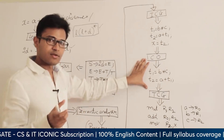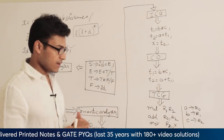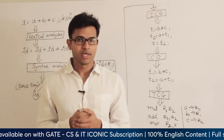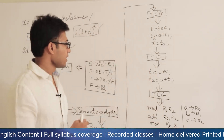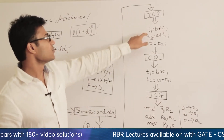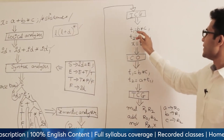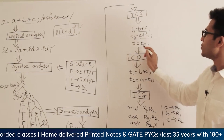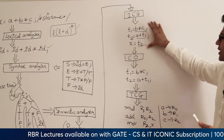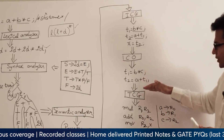The code optimizer takes the intermediate code and reduces the number of lines. For the example x = a + b * c, the three-address code had three lines: first multiply B and C into T1, then add A and T1 into T2, then move T2 into X. Using the code optimizer, we can actually reduce this to two lines. Only two lines are needed to do this job. That is why we have a code optimizer.